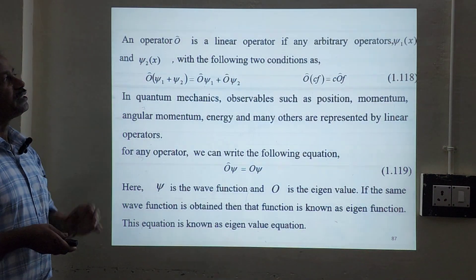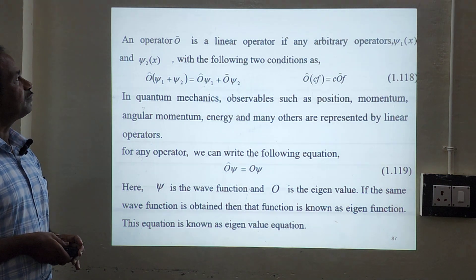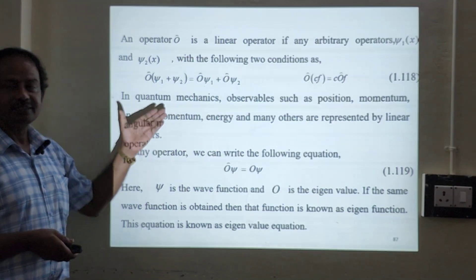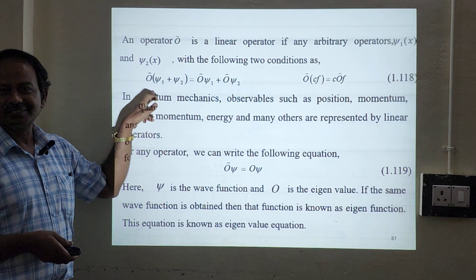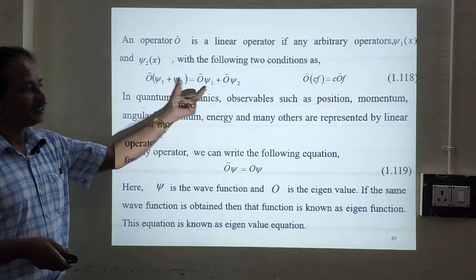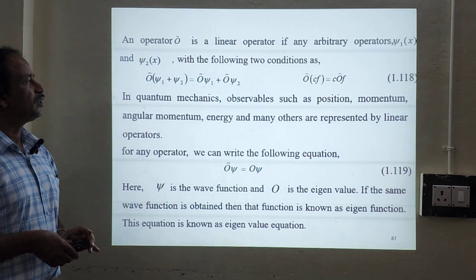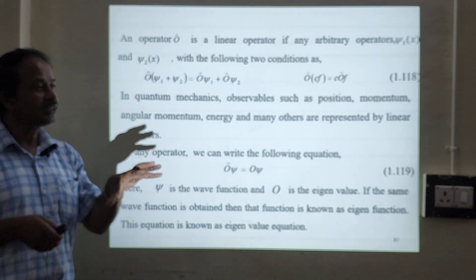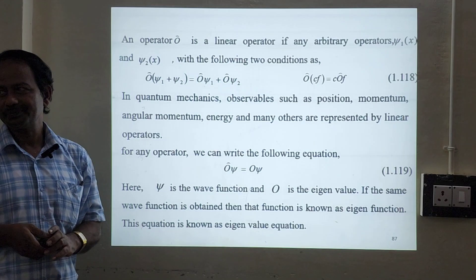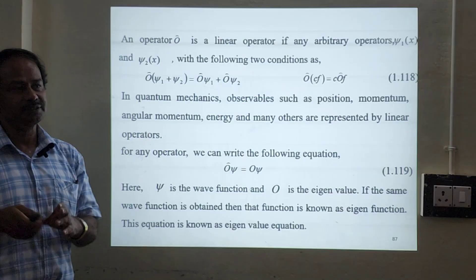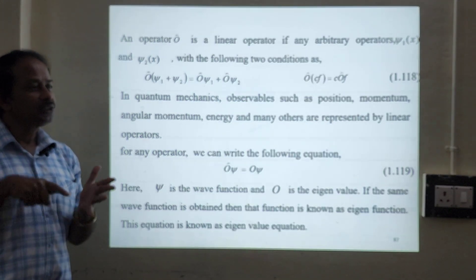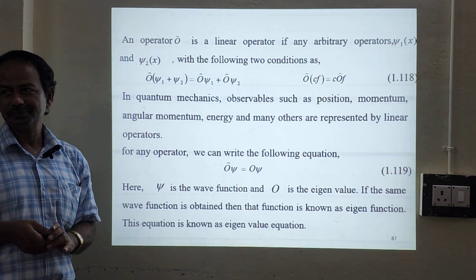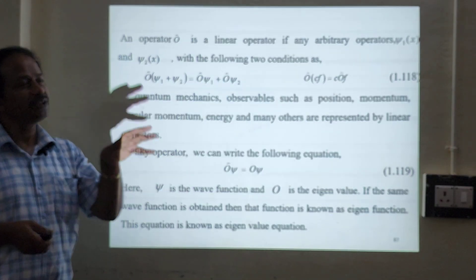So an operator O is a linear operator if, for any arbitrary vectors psi1(x) and psi2(x), the following two conditions hold. One is scalar multiplication and one is vector addition. These two conditions are very important. In quantum mechanics, observables — dynamical variables — are what we measure in the lab. These readings are called observables, and dynamical variables which depend on position and momentum are called observables.